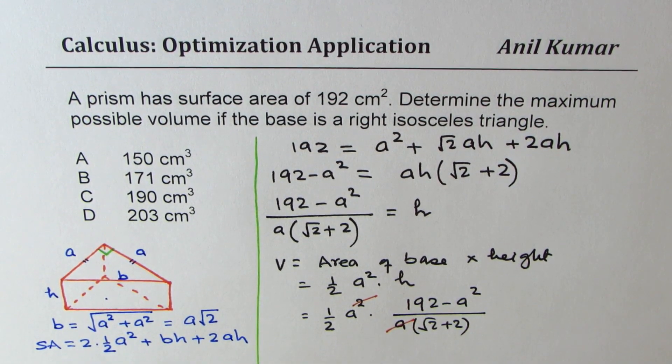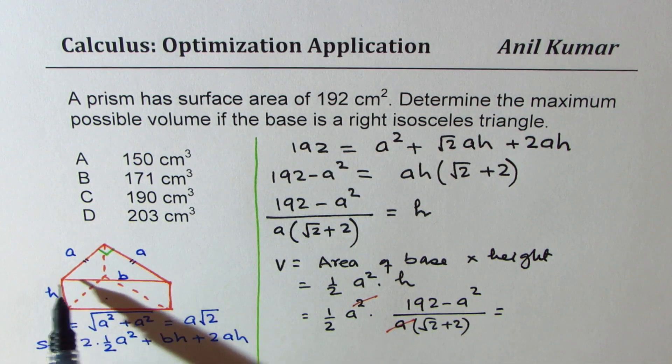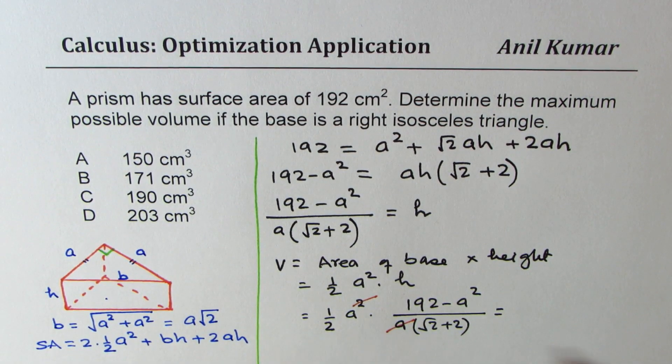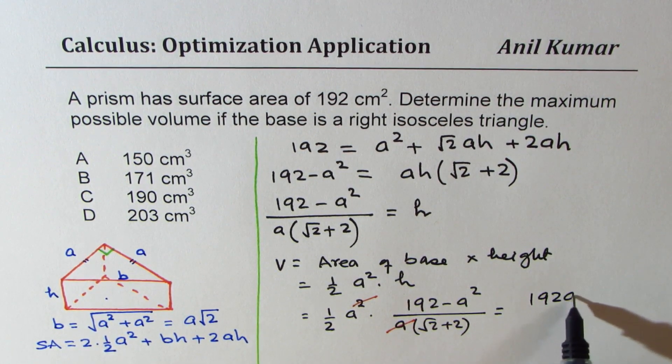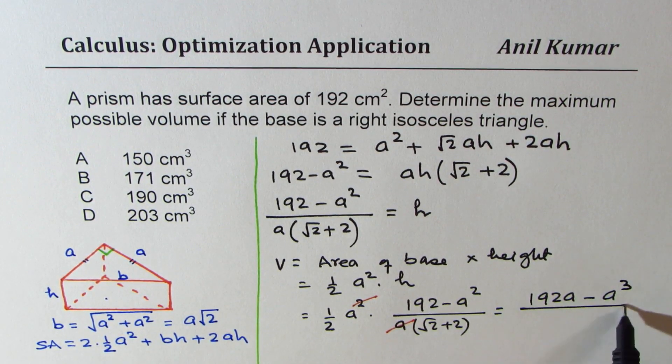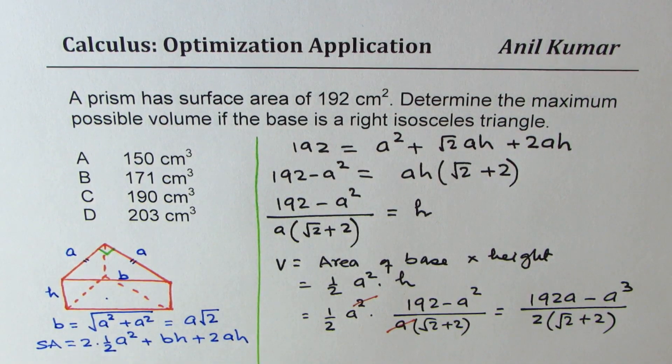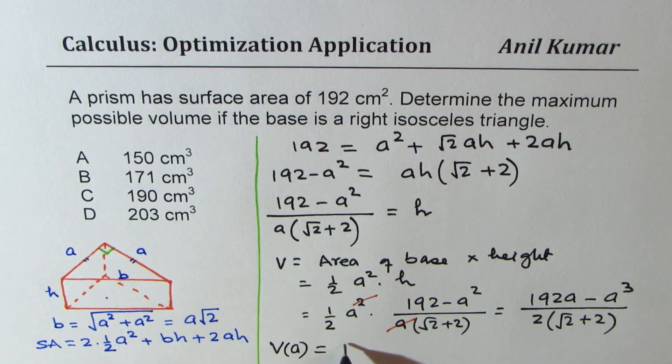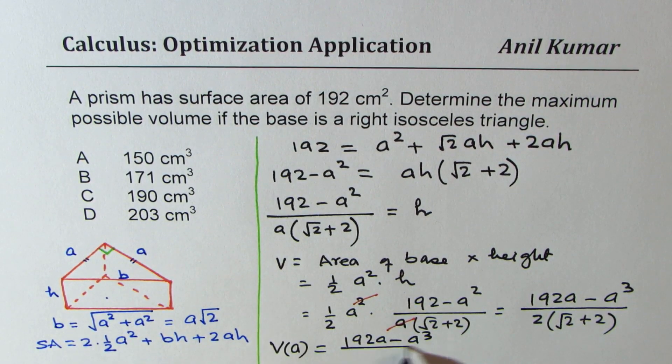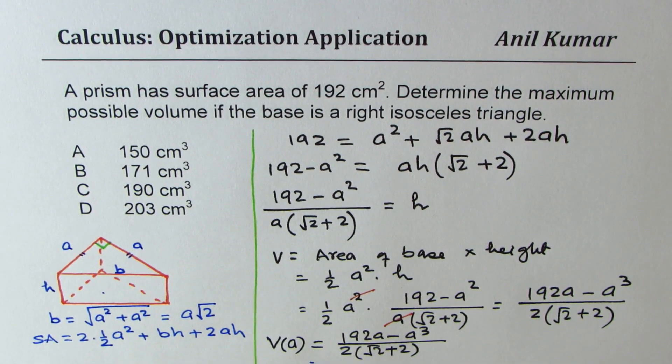Now from here we can simplify a bit. We can just cancel these two and what we get is volume as a function of one of the sides a which is if you open the bracket or let's multiply like this 192a minus a cube divided by two times square root 2 plus 2. So we have a relation of volume. So we have volume as a function of side a which is 192a minus a cube over two times square root 2 plus 2.